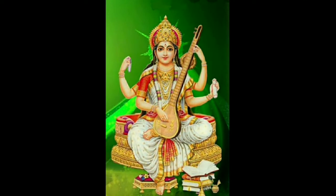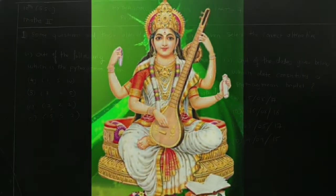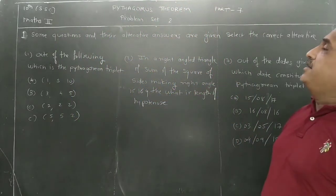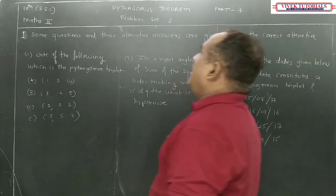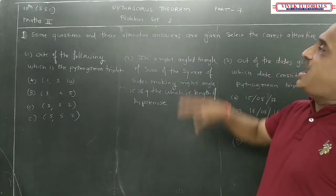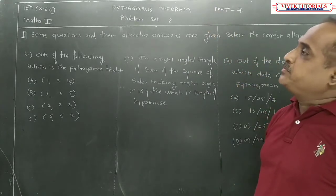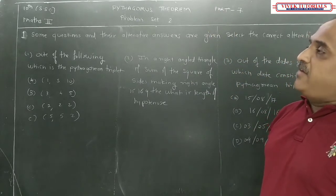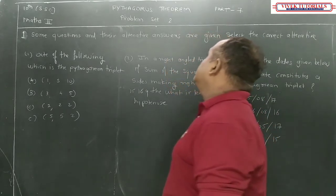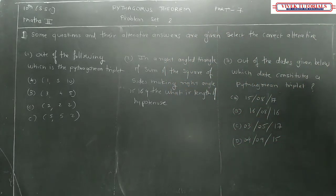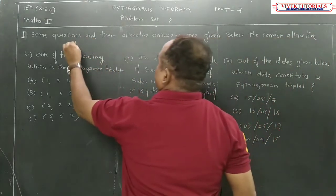Hello students, we are on the 7th part of Pythagoras theorem, 10th standard SSC Maths 2. Today we are going to start with Problem Set 2. First question: some questions and their alternative answers are given — select the correct alternative. These are MCQs.